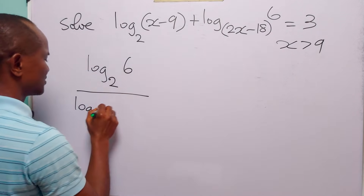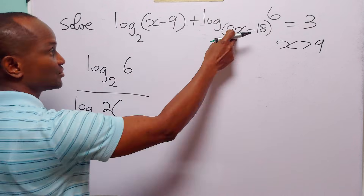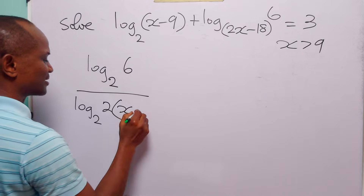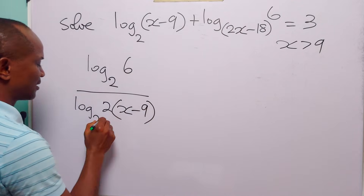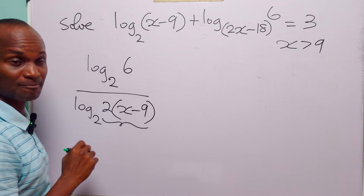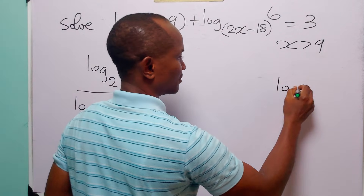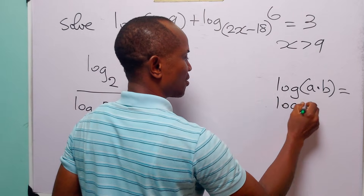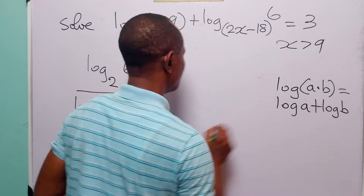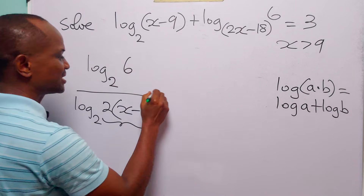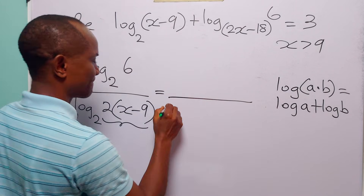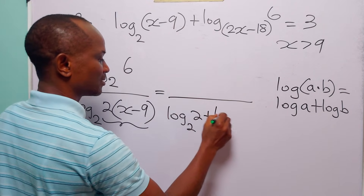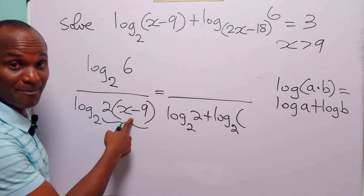Now we can factorize this. So this is 2 into x minus 9 — that is, 2x divided by 2 is x, and minus 18 divided by 2 is minus 9. When you look at this, you will see that this is a product. Recall that log of A times B is equal to log A plus log B. So this denominator can be written as log to base 2 of 2 plus log to base 2 of x minus 9.